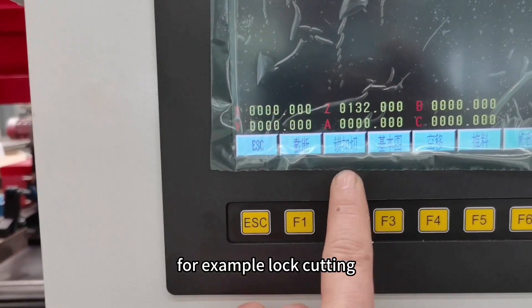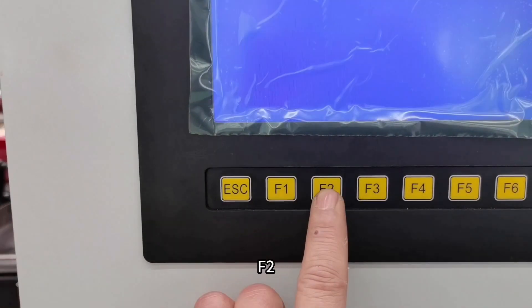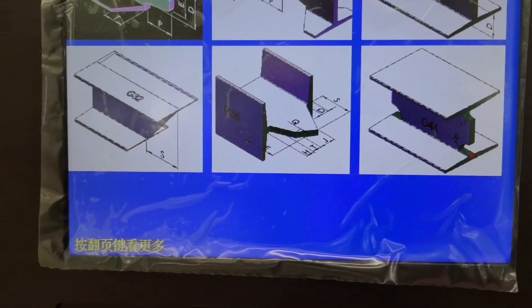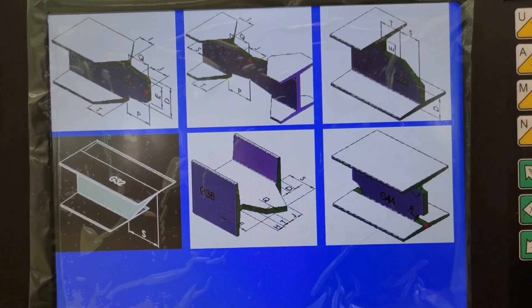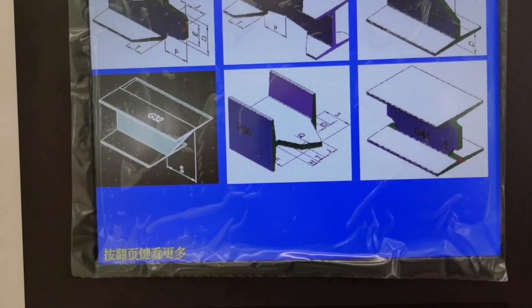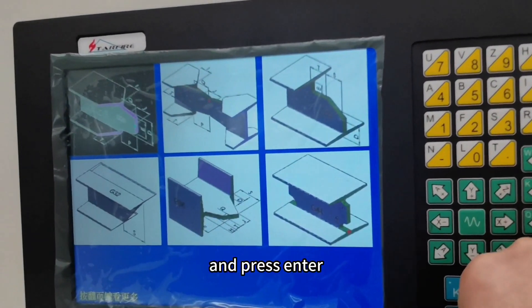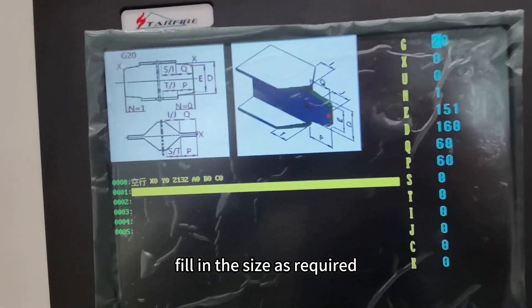For example, lock cutting, F2. Select the desired cutting form and press enter. Fill in the size as required.